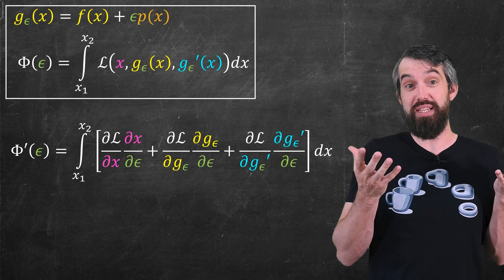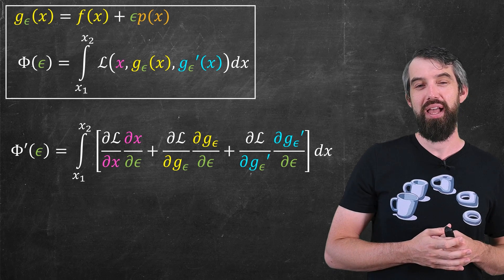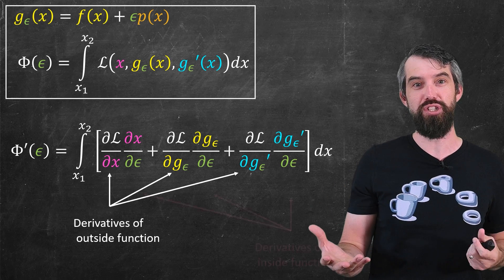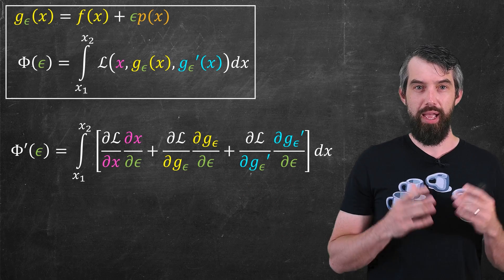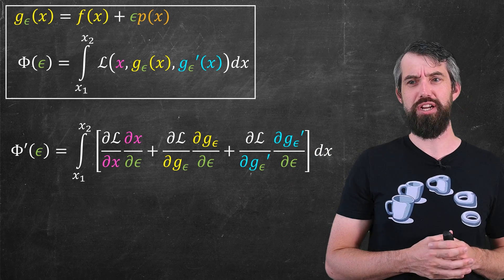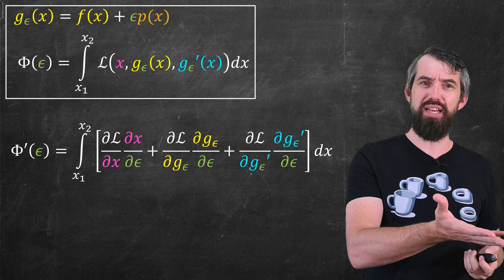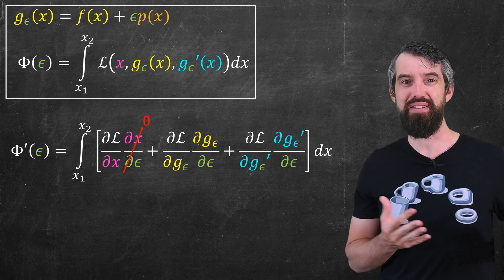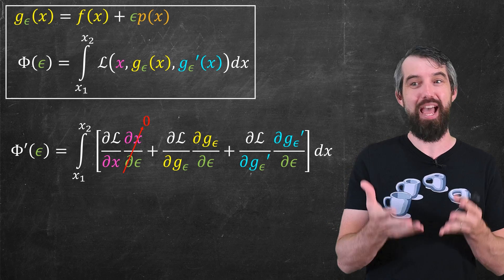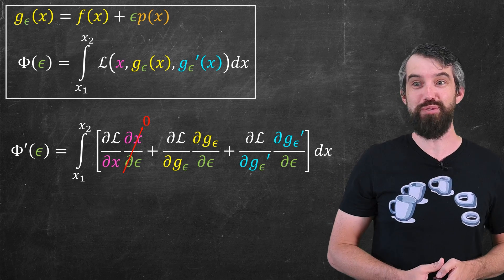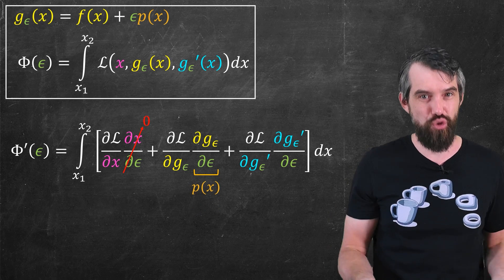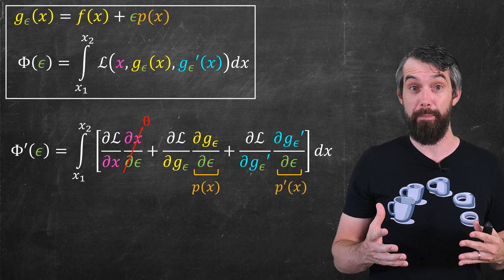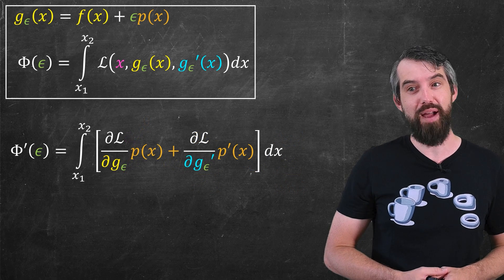But basically you're just doing the same thing as the single variable chain rule and adding them up together. Now there's multiple outside functions, and so you're just taking the derivative of each of those outside functions, and then multiplying it by the derivatives of the inside functions. And I can actually really clean this expression up a lot. The first thing I know is that x is an independent variable, it doesn't depend on ε at all, so this first term is entirely zero. And I have my definition of g_ε here, it's just f + ε·p(x). The partial with respect to ε is very simple, it's just going to be p(x). Same thing if I take the derivative, it would be f' + εp', so the derivative with respect to ε is just p'.